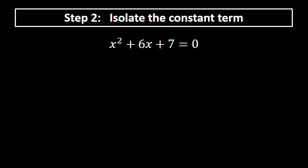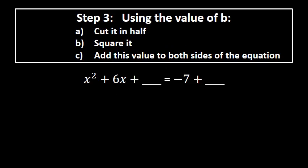Step two is to isolate the constant term — the term without a variable. We subtract 7 from both sides, leaving x squared plus 6x on the left and negative 7 on the right.